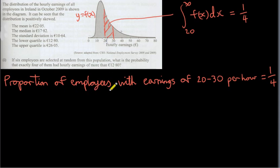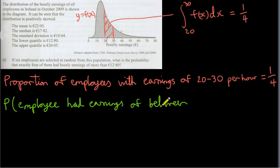Now, we could give this a probability interpretation. What we could do is say that the probability of a randomly selected employee has or had earnings of between 20 and 30 euros per hour is one quarter.